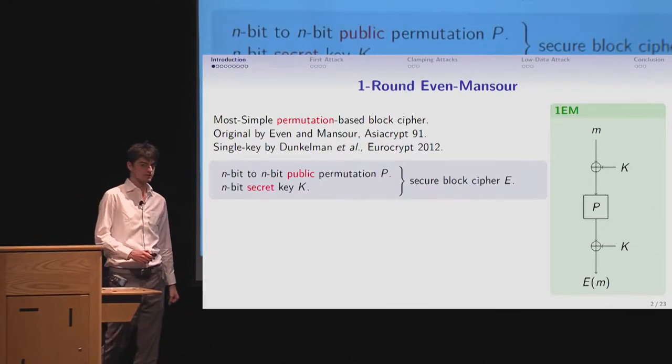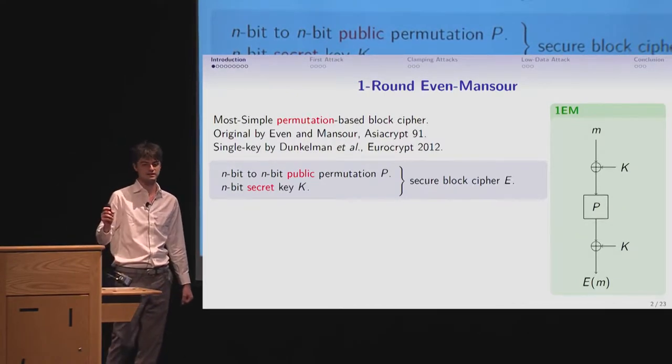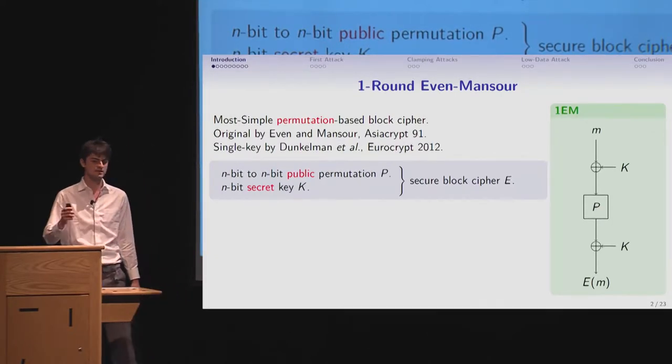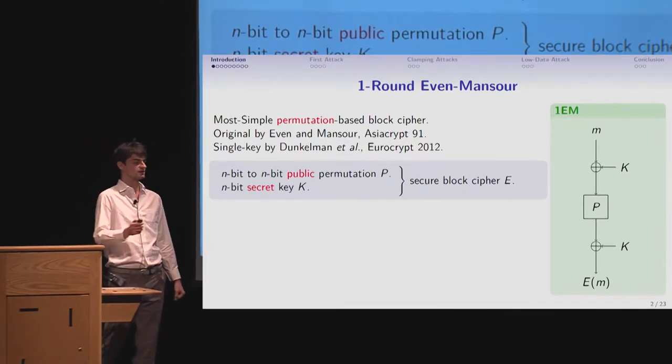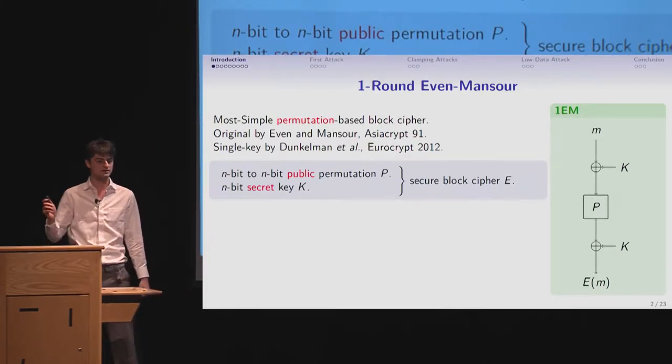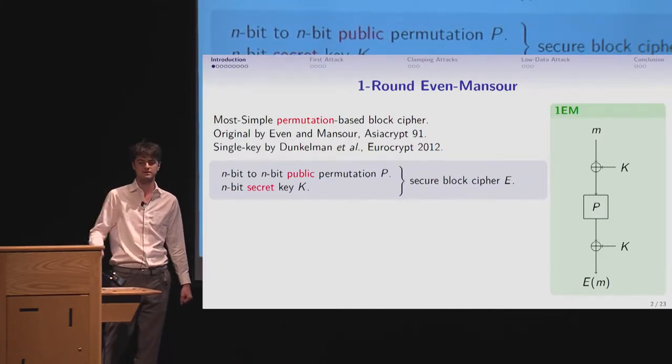So the Even-Mansour cipher takes an n-bit to n-bit public permutation P, and n-bit secret key K. And it's used to build a secure block cipher E, just as you can see on the picture. It takes the plaintext, xor it by the key, make it go through the permutation, and then xor again by the same key to get the ciphertext.